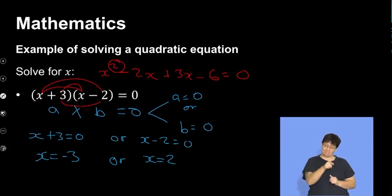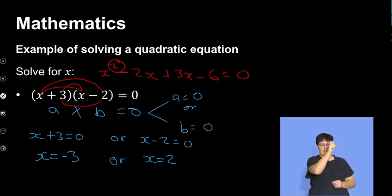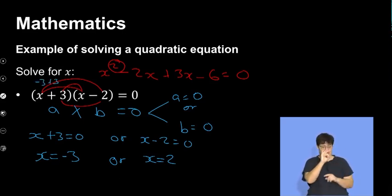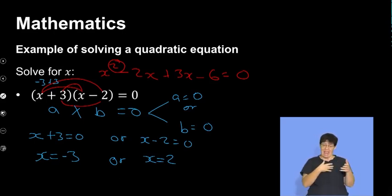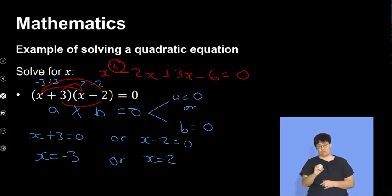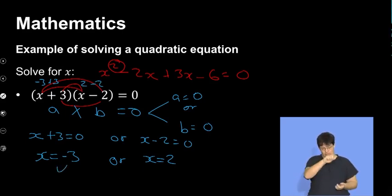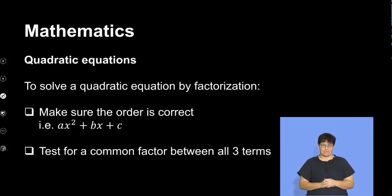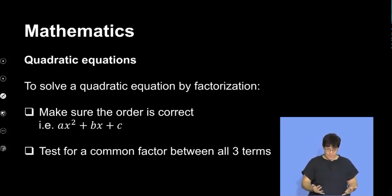With the two-bracket example: if I substitute negative 3, it becomes negative 3 plus 3 which is 0 — zero multiplied by anything gives us 0. With positive 2, substituting 2 gives minus 2, giving us 0 — zero multiplied by anything is always going to be 0. So both my solutions are correct.